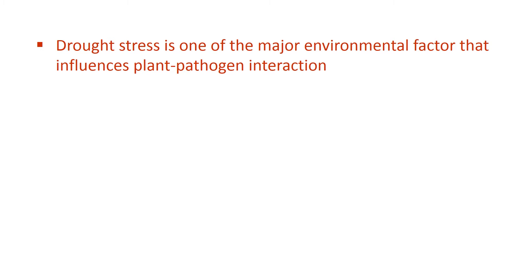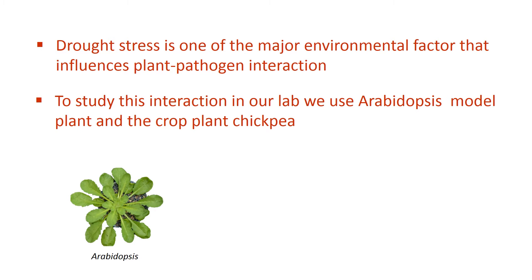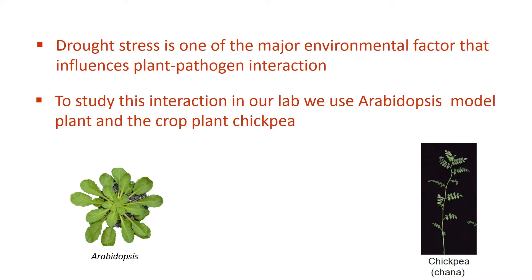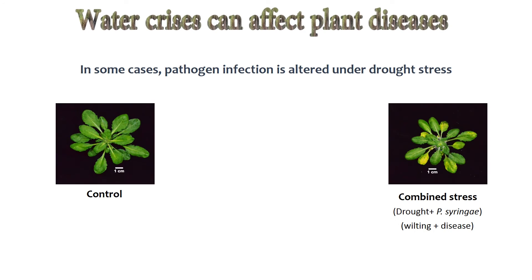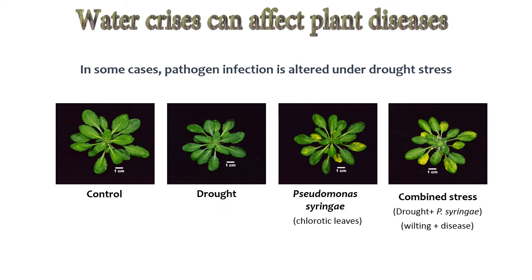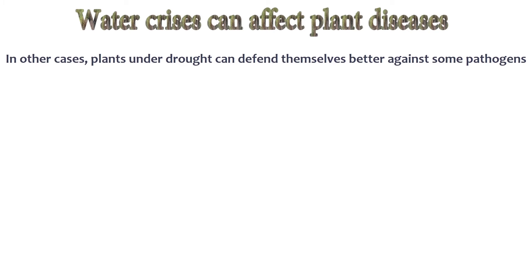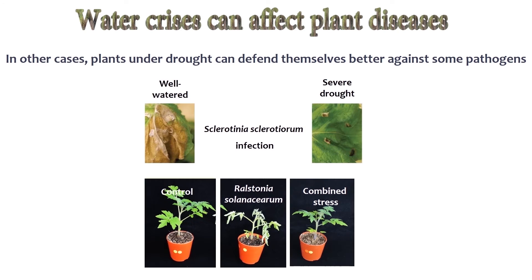Drought stress is one of the major environmental factors that influences plant-pathogen interaction. To study this interaction, our lab uses Arabidopsis as a model plant and the crop plant chickpea. In some cases, pathogen infection is altered under drought stress — Nicotiana and tomato plants defend against some pathogens better under drought stress.